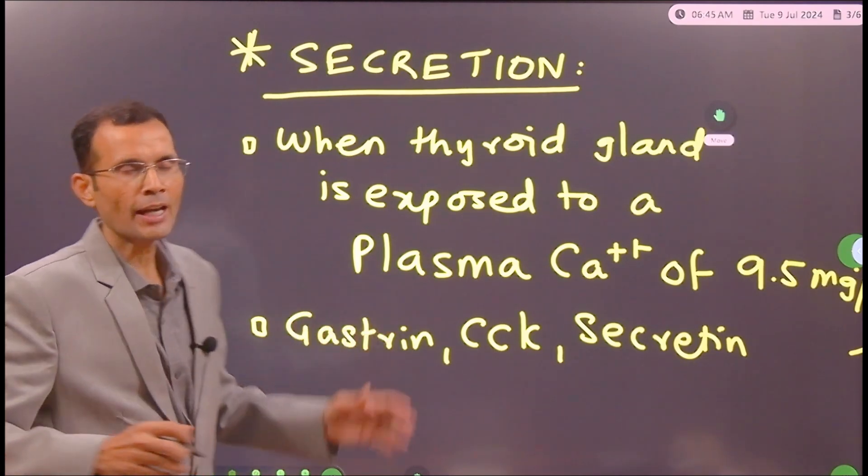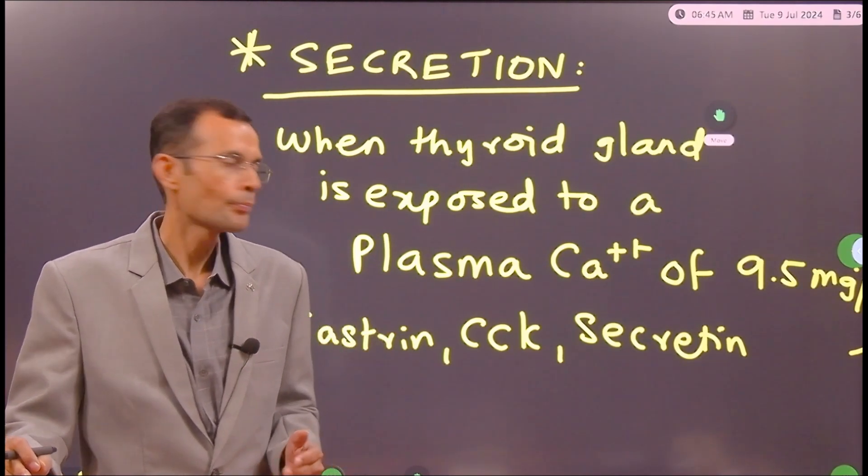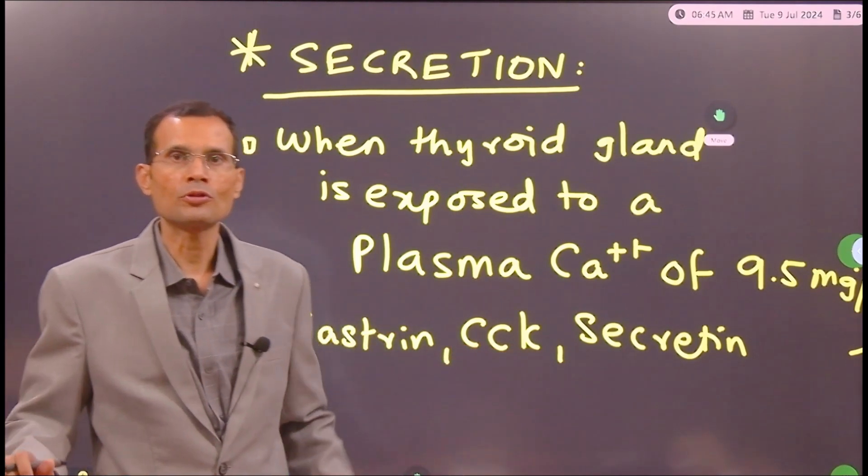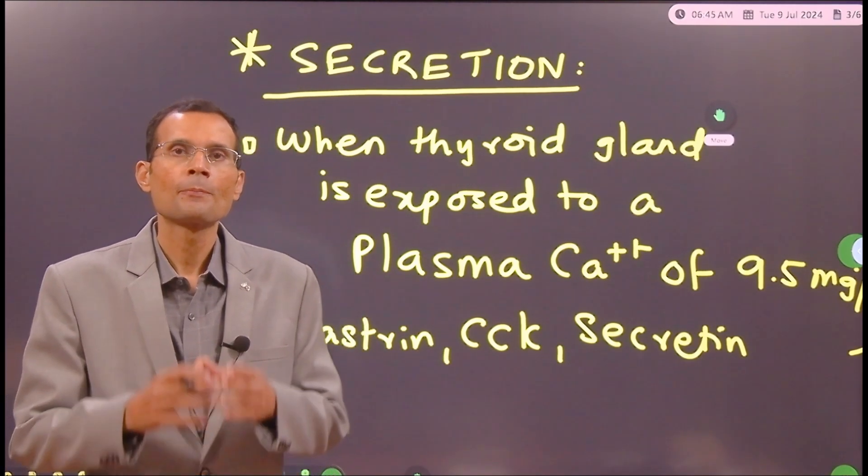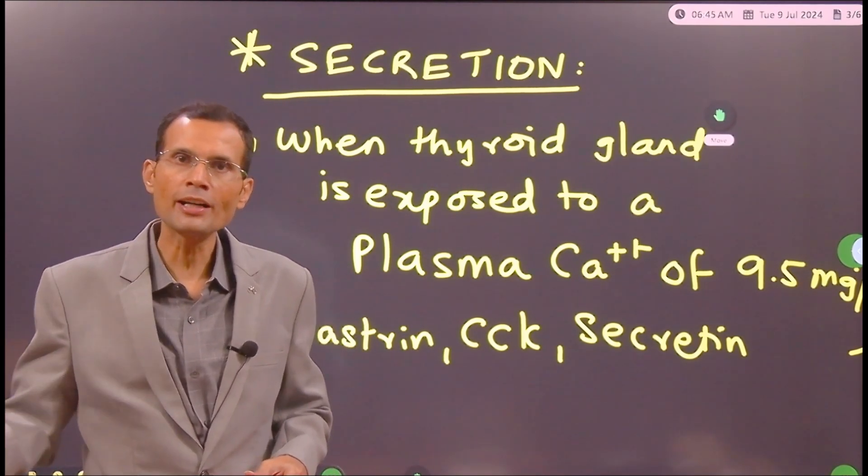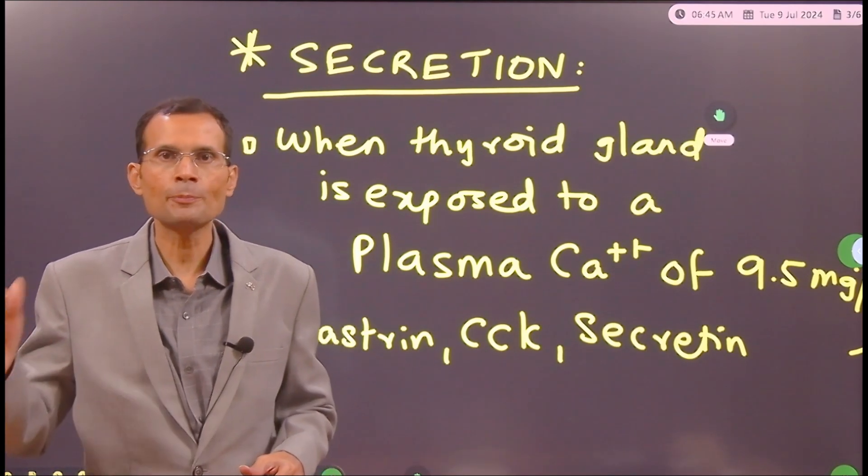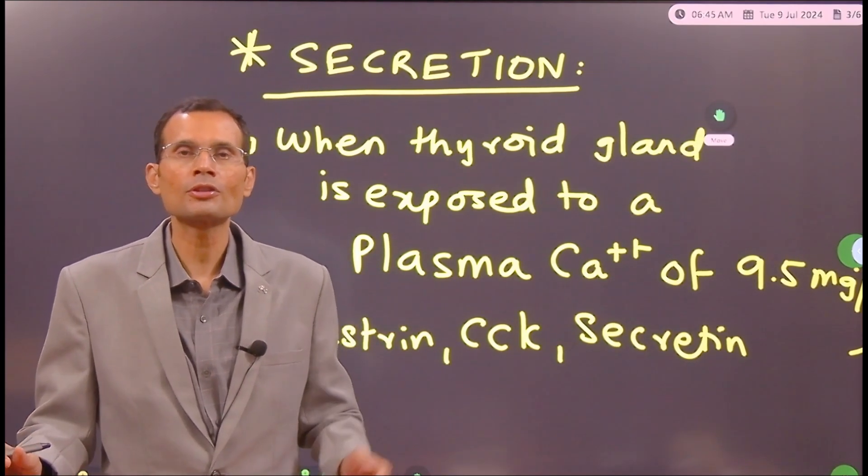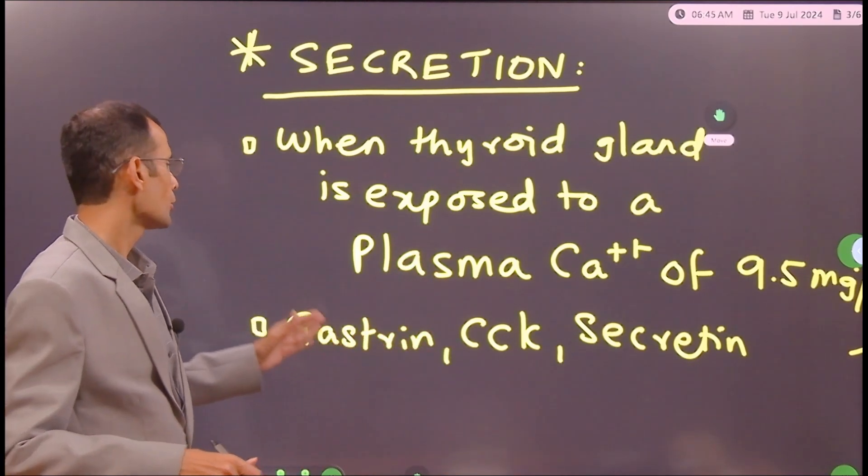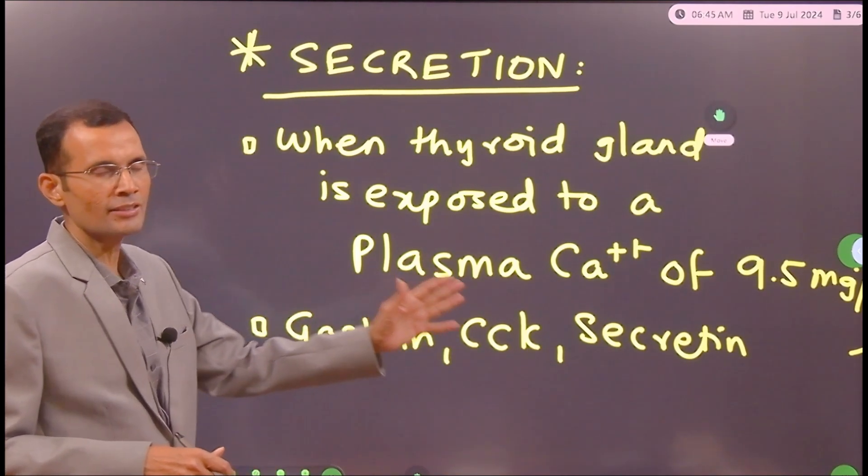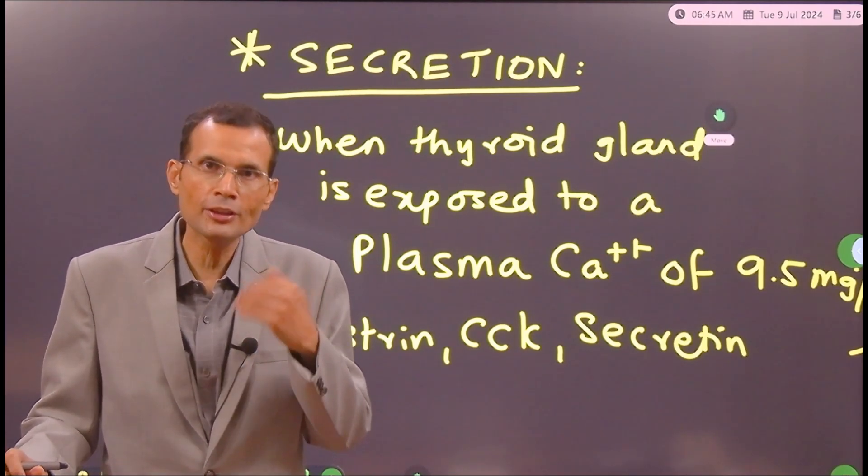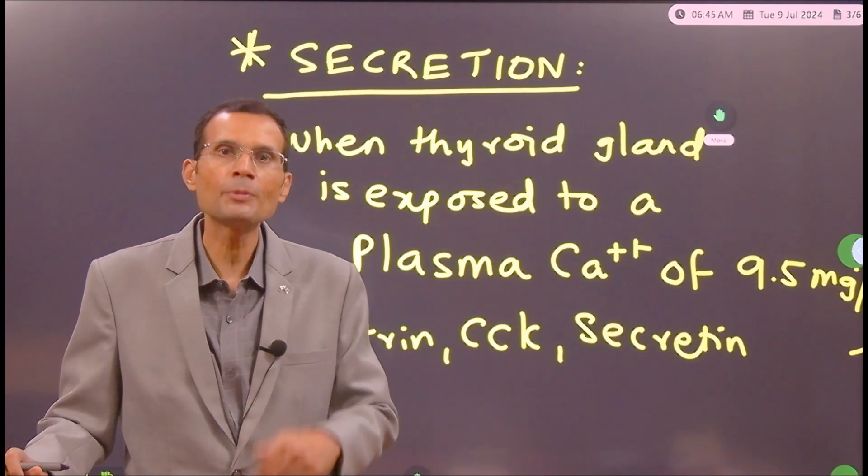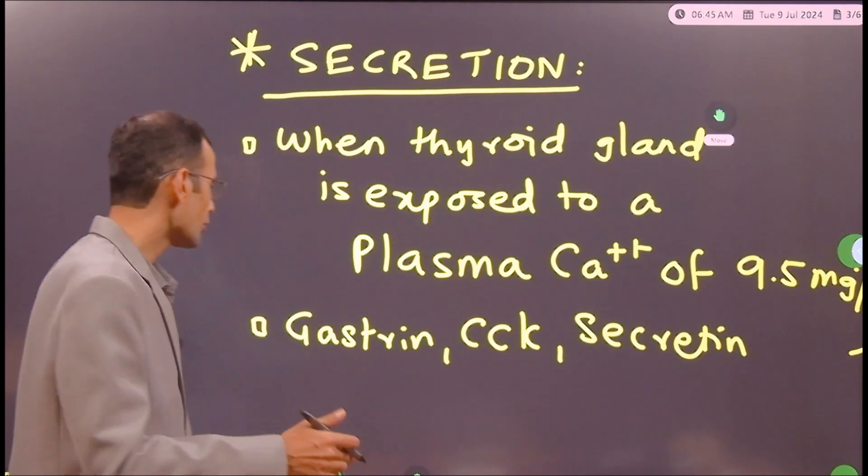Apart from plasma calcium, the other stimuli are the GI hormones. Let's not forget that whenever we consume foodstuffs, plasma calcium is going to rise and then this calcium is going to be deposited on bones with the help of calcitonin. So gastrin, CCK, secretin - all these GI hormones which are released after consumption of food, they will be stimuli for calcitonin release as well.